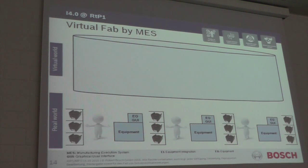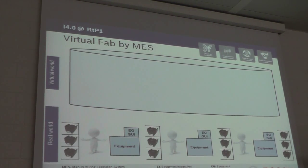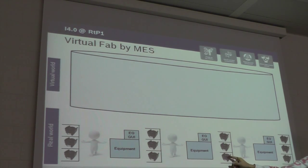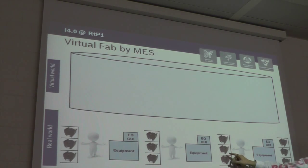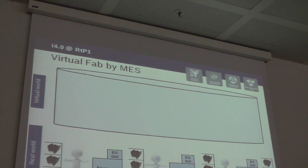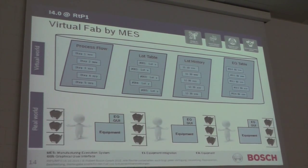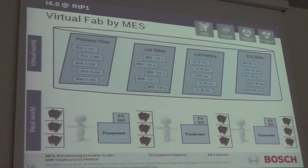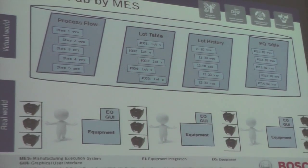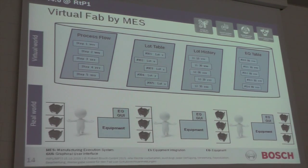In a schematic way, I would like to mention the first thing we have done here. We have taken into account our complete production area with several equipments and wafer lots — a kind of carrier containing 25 wafers. We have a lot of equipments and lots, and all necessary information and data have been put into a virtual world. This virtual world contains all process flows from more than 1,000 different products, all lot information, and we have thousands of lots. The complete history is in there as well — we know exactly when which lot has been processed on which equipment.